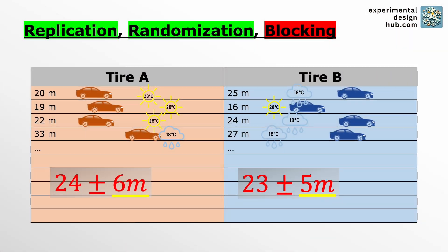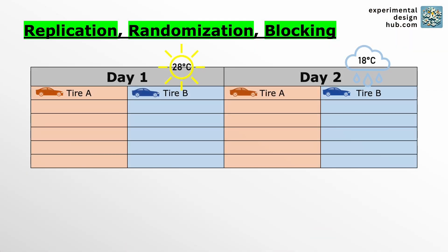So what if we use replication, randomization and blocking all together? In this case, she can group the tests by day — so each day is a block. She randomizes within those blocks, testing both tires each day.